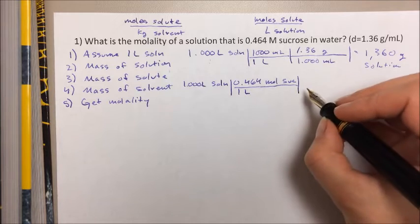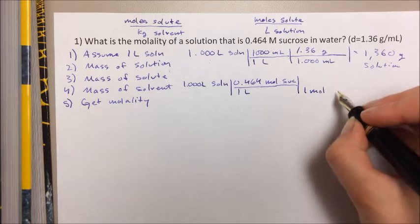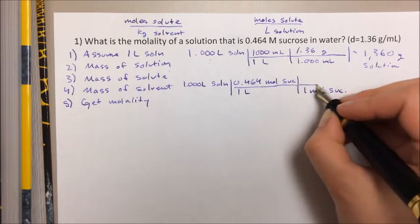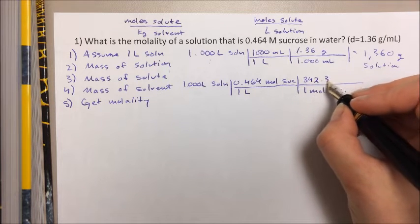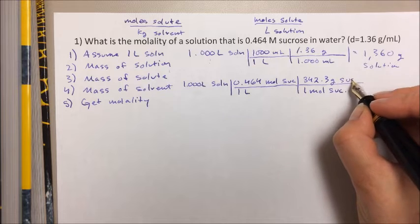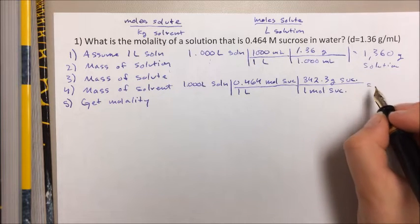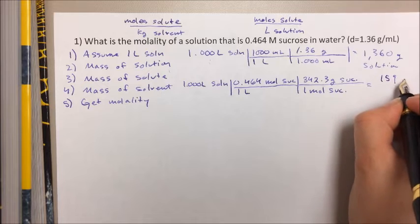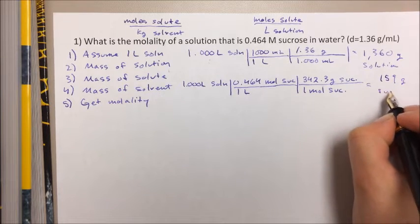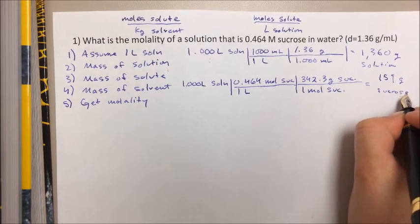And if you do a little googling, you can find out that one mole of sucrose is 342.3 grams of sucrose. If you crunch that down, we've got 159 grams of sucrose in this solution.